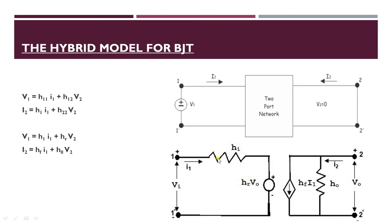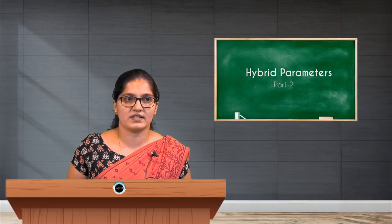This is the hybrid model of a BJT, which is a two port network with four parameters: HI, HR, HF, and HO. These four hybrid parameters can also be written as: H11 as HI, H12 as HR, H21 as HF, and H22 as HO. These four hybrid parameters help to determine the characteristics of a transistor as a two port network.